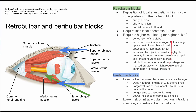The peribulbar block, on the other hand, has a lower risk of these complications. It does not enter the muscle cone; instead, it goes above or below the eye without entering the muscle cone. It doesn't target the origins of the cranial nerves themselves, and because of that, it requires a larger volume of local anesthetic — two to three times that of the retrobulbar block. It also has a longer time of onset because you're injecting in the vicinity of the nerves, not within the nerves themselves. It also has a lower incidence of complete akinesia, so you might not have perfect eye paralysis after a peribulbar block.